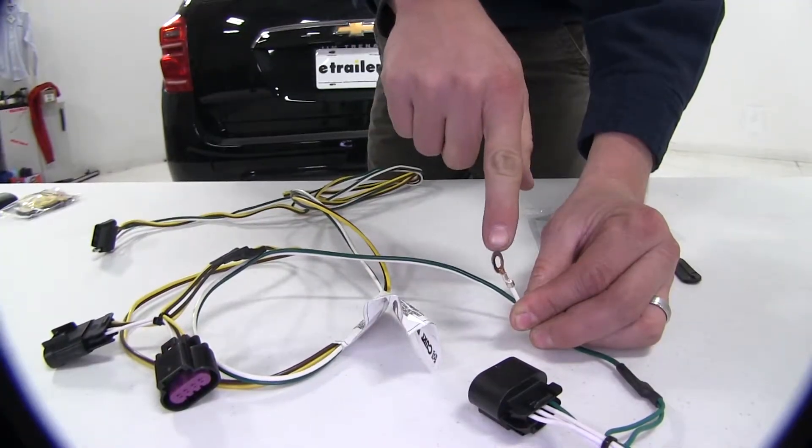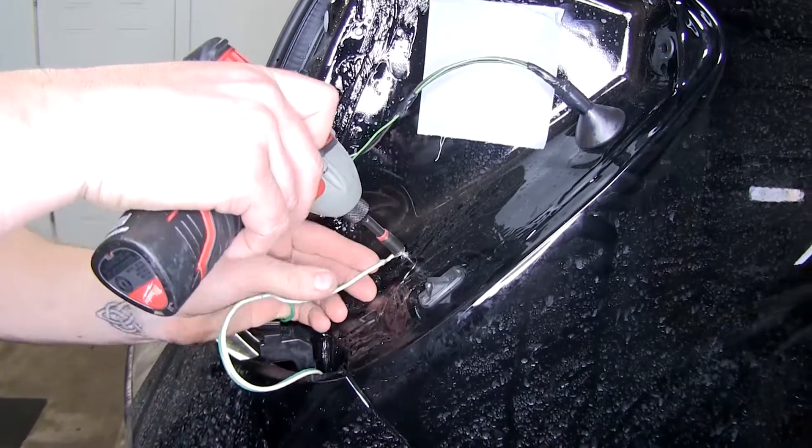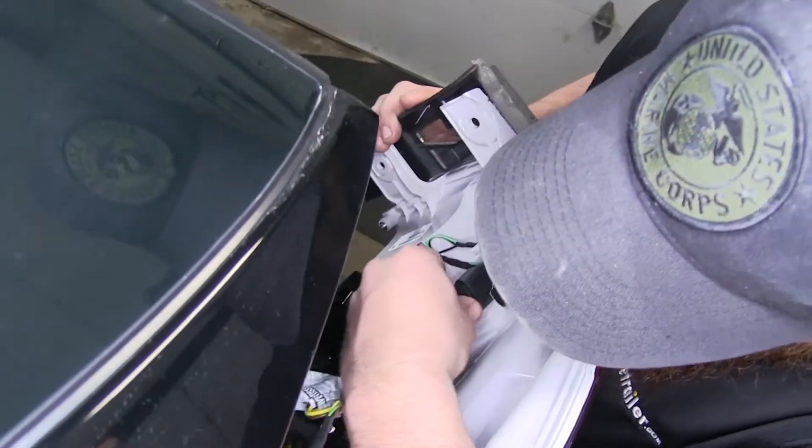You will have to ground both wiring harnesses. The self-tapping screw is included. Both are going to use T-style connectors to plug into your tail lights.